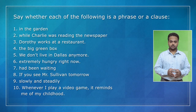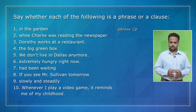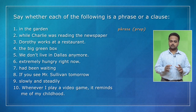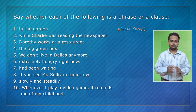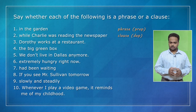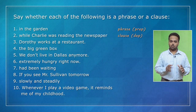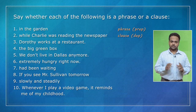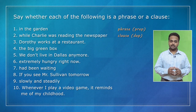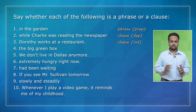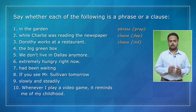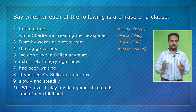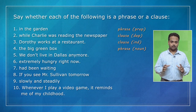Let's discuss the answers. Number one: 'in the garden' is a phrase because there's no subject-verb combination, and it's a preposition phrase because it tells us about a place using the preposition 'in.' Number two is a clause — it has a subject, 'Charlie,' and a verb, 'was.' This is a dependent clause because it starts with 'while' and it's not a complete sentence. Number three is also a clause but it's an independent clause because it could be a sentence by itself. Number four is not a clause, it's a phrase — there's no subject-verb combination, and it's a noun phrase because it focuses on the noun 'box.'